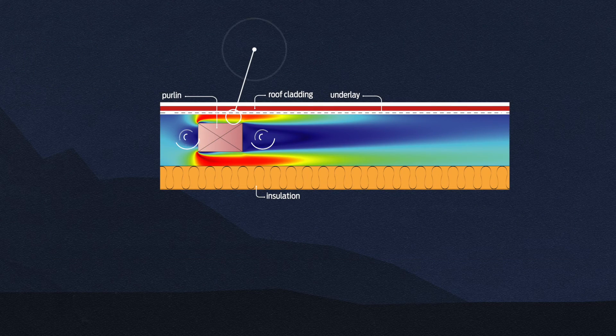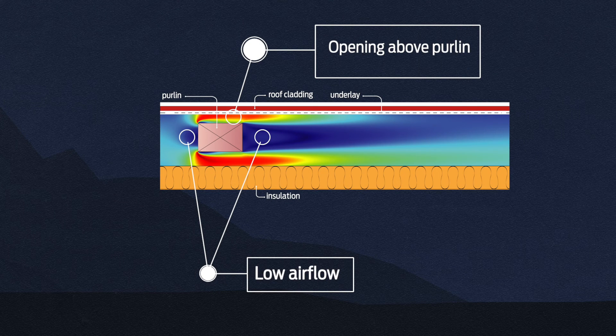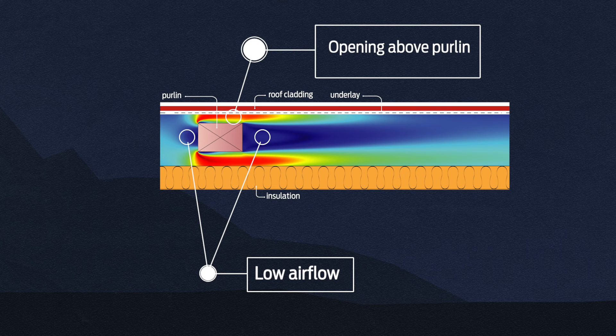Modeling an opening above the purlin shows that the zone of almost stagnant air is no longer in contact with the potentially cold roof underlay.